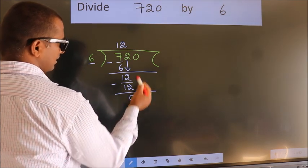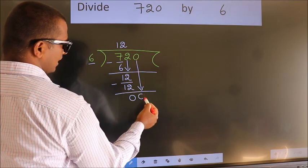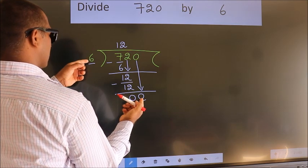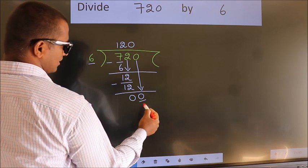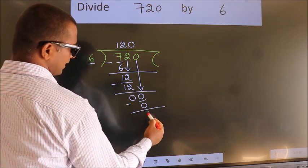After this, bring down the beside number. So, 0 down. So, 0. When do we get 0? In the 6 table, 6 times 0 is 0. Now, we subtract. We get 0.